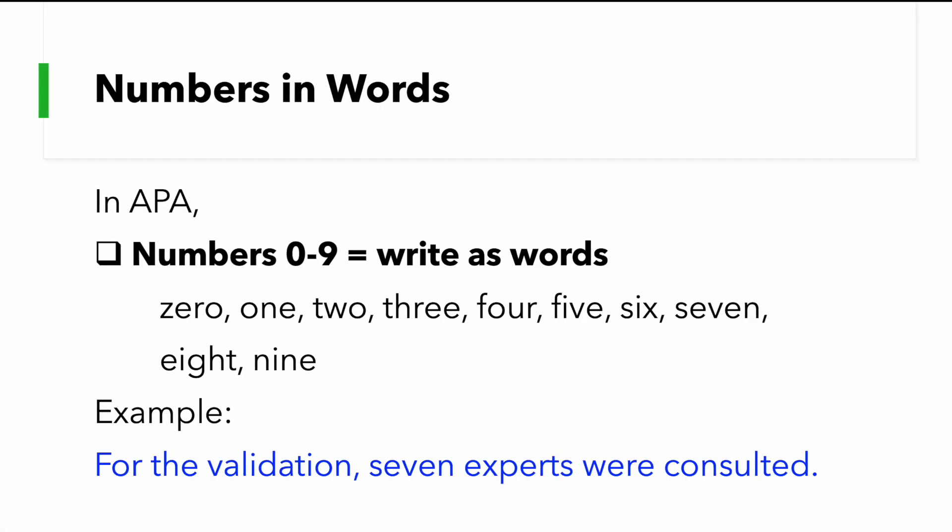Numbers in words. In APA, we write numbers 0 to 9 as words. So, we write this way: zero, one, two, three, four, five, six, seven, eight, nine. We write these 0 to 9 in words or as words.